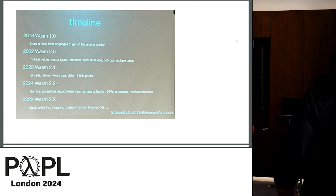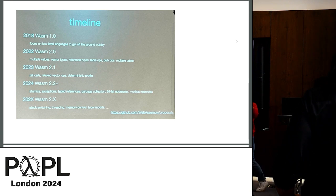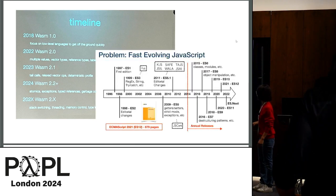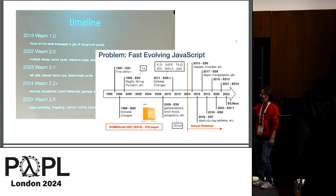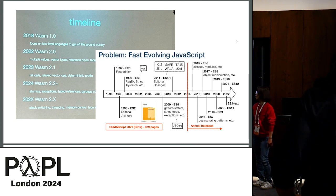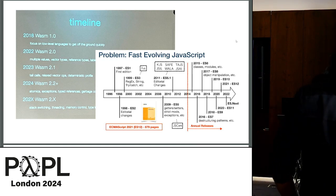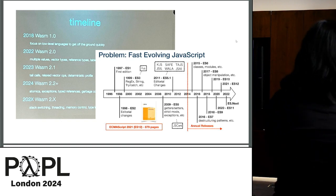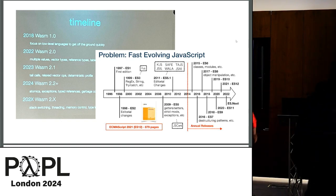In the morning of the very first day, Andreas gave this timeline, and I thought, very good. Because that afternoon I showed this slide. This is about the history of JavaScript. Until 2015, there was just one pretty big — 879 pages — specification. And since 2015, the spec is released annually, every year.